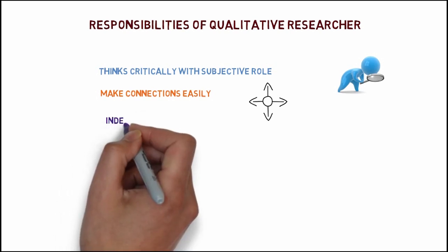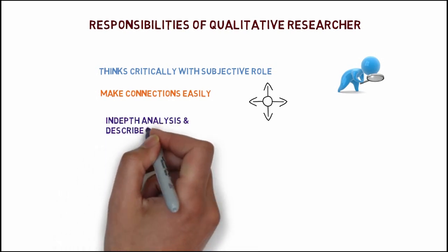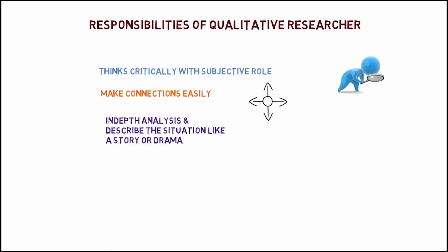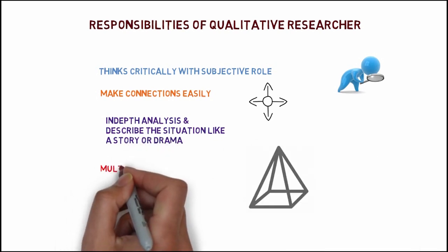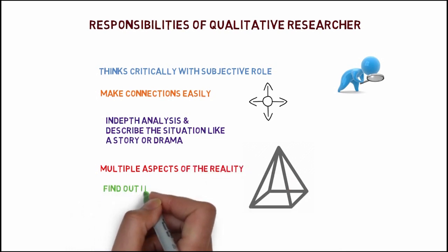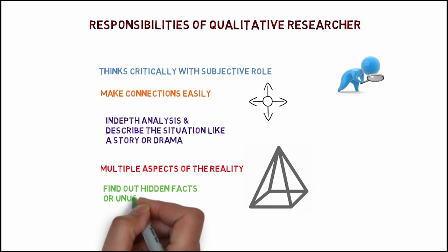Qualitative researchers love to do in-depth analysis and describe the situation like a story or a drama. Unlike quantitative researchers, they used to see multiple aspects of the reality or the situation. They also tend to find out the hidden facts on unusual things from the situation.